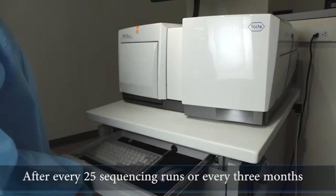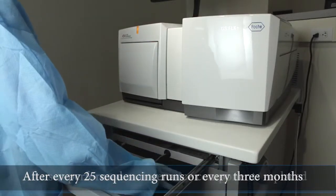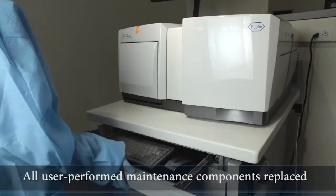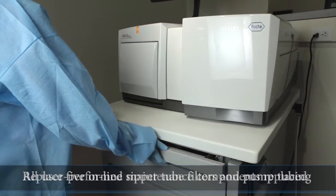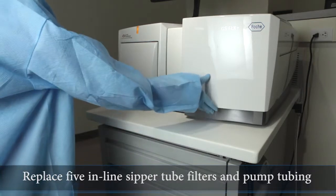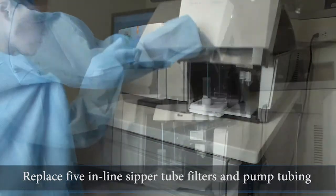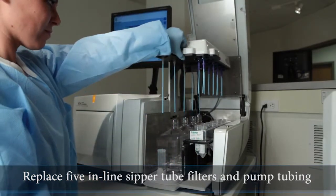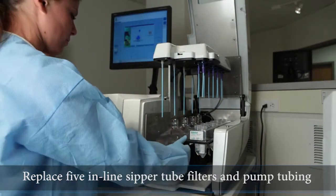After every 25 sequencing runs or every three months, whichever occurs first, all user-performed maintenance components will require replacement. This includes the five inline sipper tube filters on the left-hand side of the sipper manifold and the tubing for the two main pumps located under the pump cover between the camera and the fluidics area of the instrument.